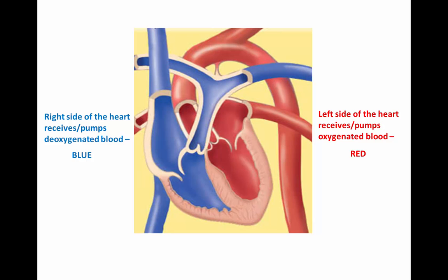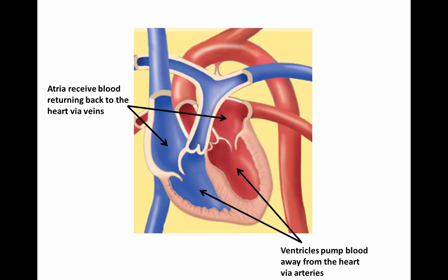Before going over our circulatory routes, remember two points. The right side of the heart receives and pumps deoxygenated blood — on heart diagrams the right side is blue. The left side of the heart receives and pumps oxygenated blood — the left side is red. The atrial chambers always receive blood returning to the heart via veins, and the ventricles pump blood away from the heart via arteries.